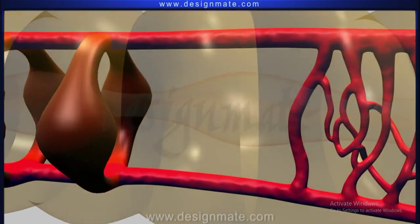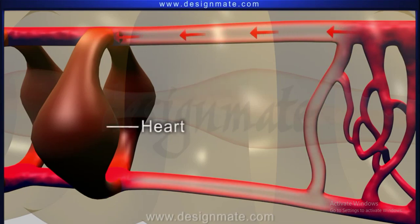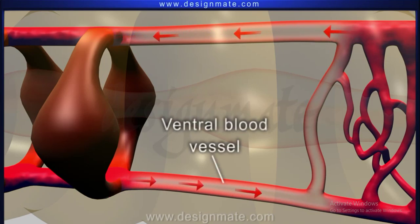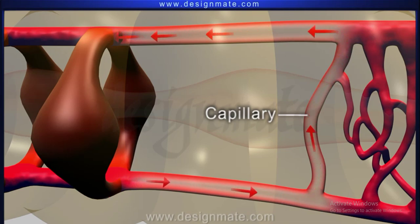The nutrient-rich blood from the dorsal blood vessel reaches the lateral hearts. From there it enters the ventral blood vessel. The ventral vessel pumps blood to the rest of the body. The blood is brought back to the dorsal blood vessel by capillary network.